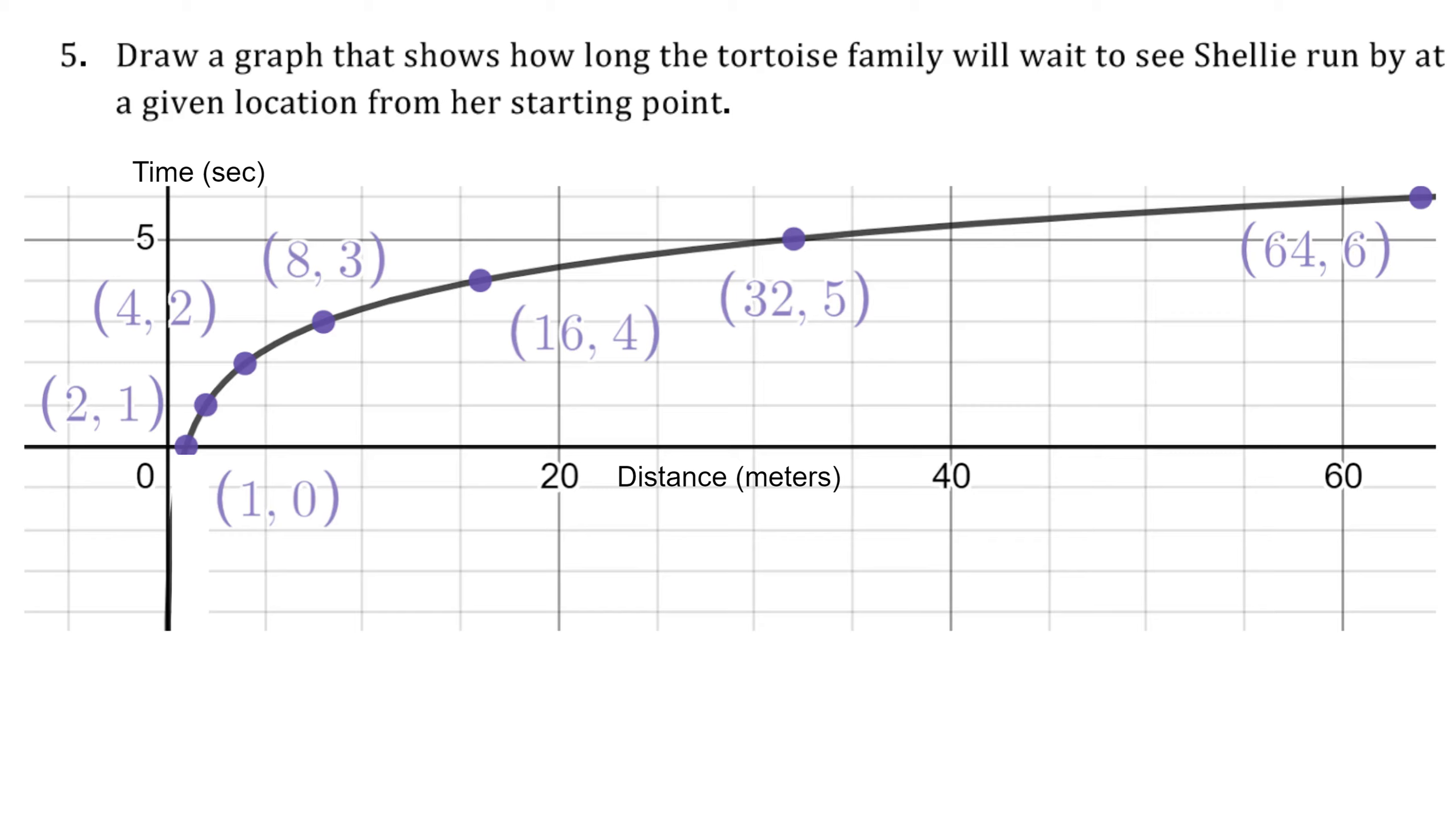And this is a graph that shows how long the tortoise family will have to wait to see Shelley run by a given location from her starting point. Notice now the domain is 1 to infinity and the range is 0 to infinity, which is switched from the previous domain and range before we inverted the graph.